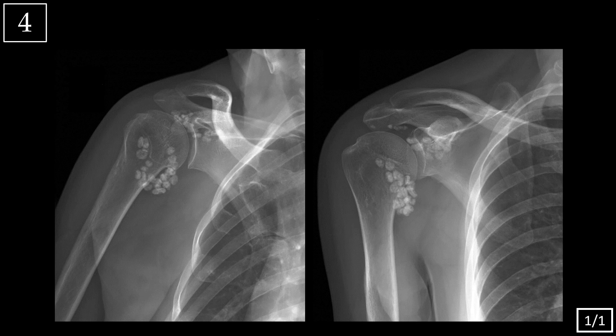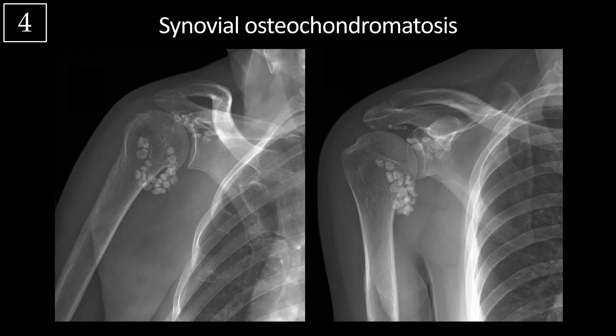Case four. Here we're looking at two views of the right shoulder. The shoulder joint is intact and there's no evidence of fracture, but we see numerous small ossific densities scattered about the shoulder joint, all similar in size. This is characteristic of synovial osteochondromatosis — a synovial metaplasia and proliferation that produces multiple intra-articular cartilaginous loose bodies that may or may not ossify.